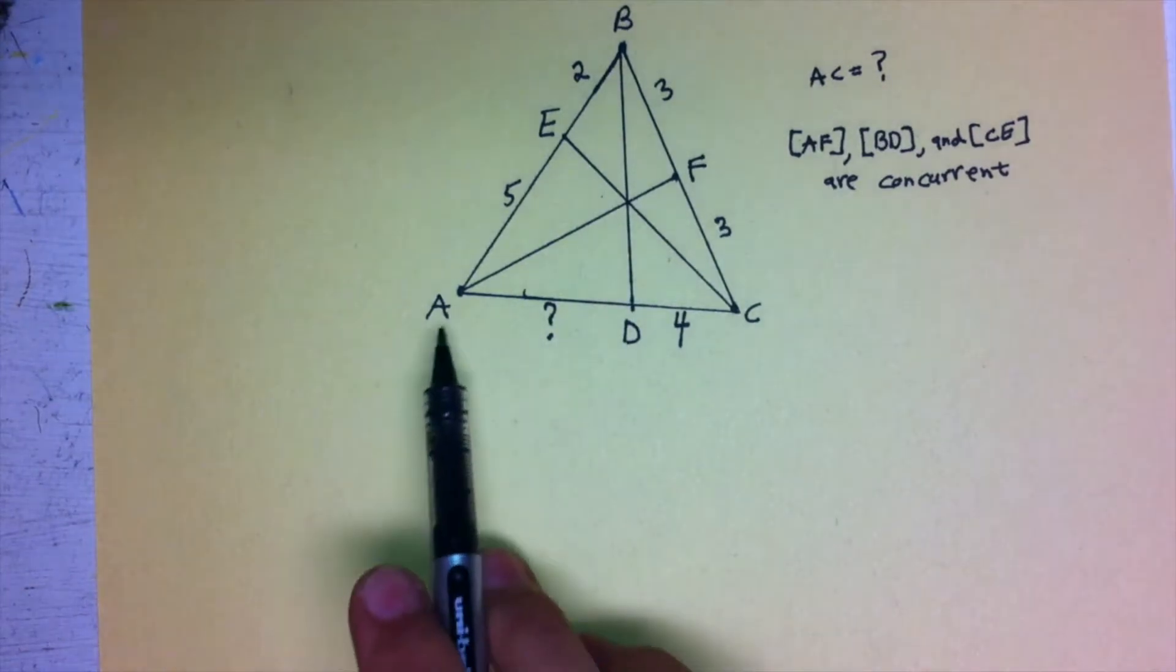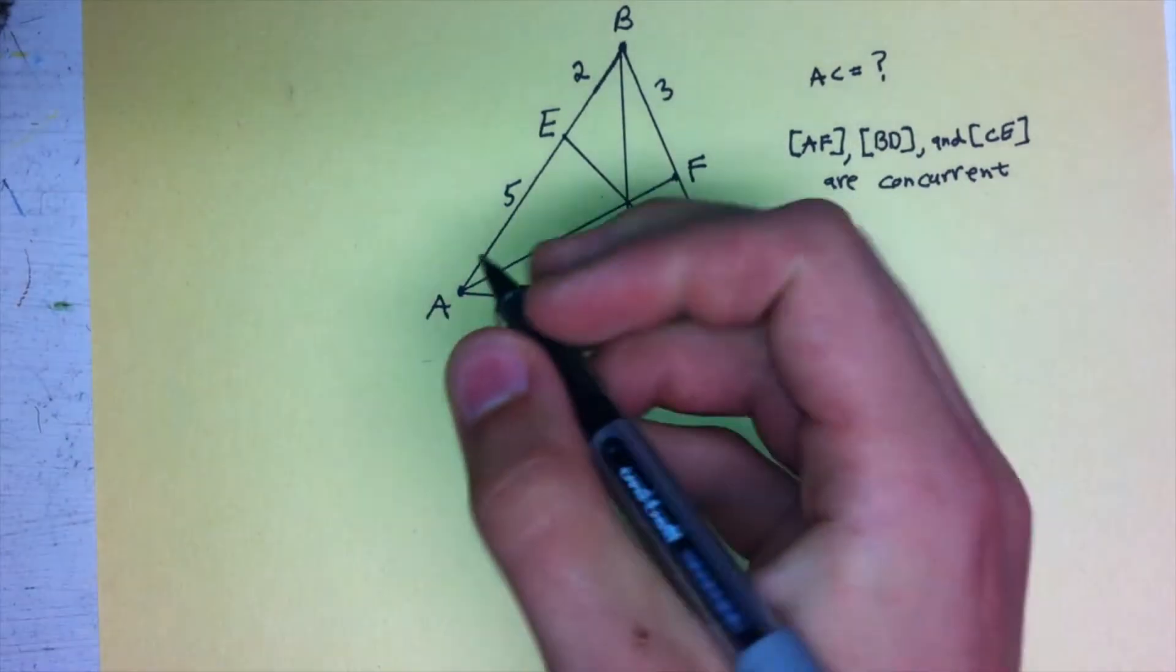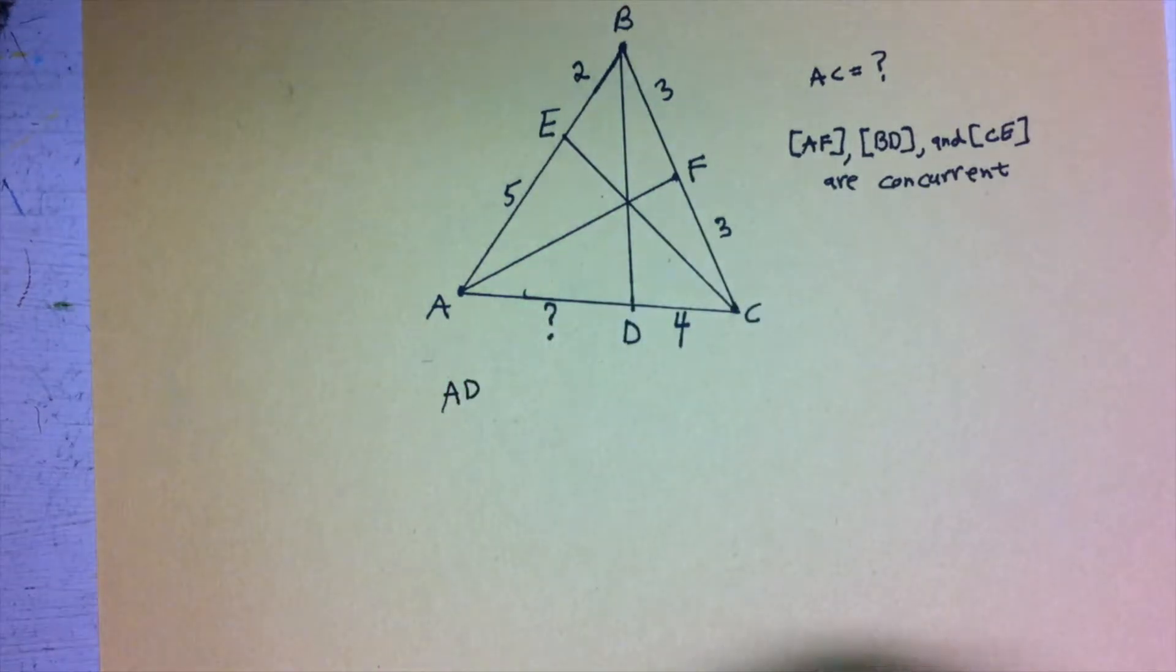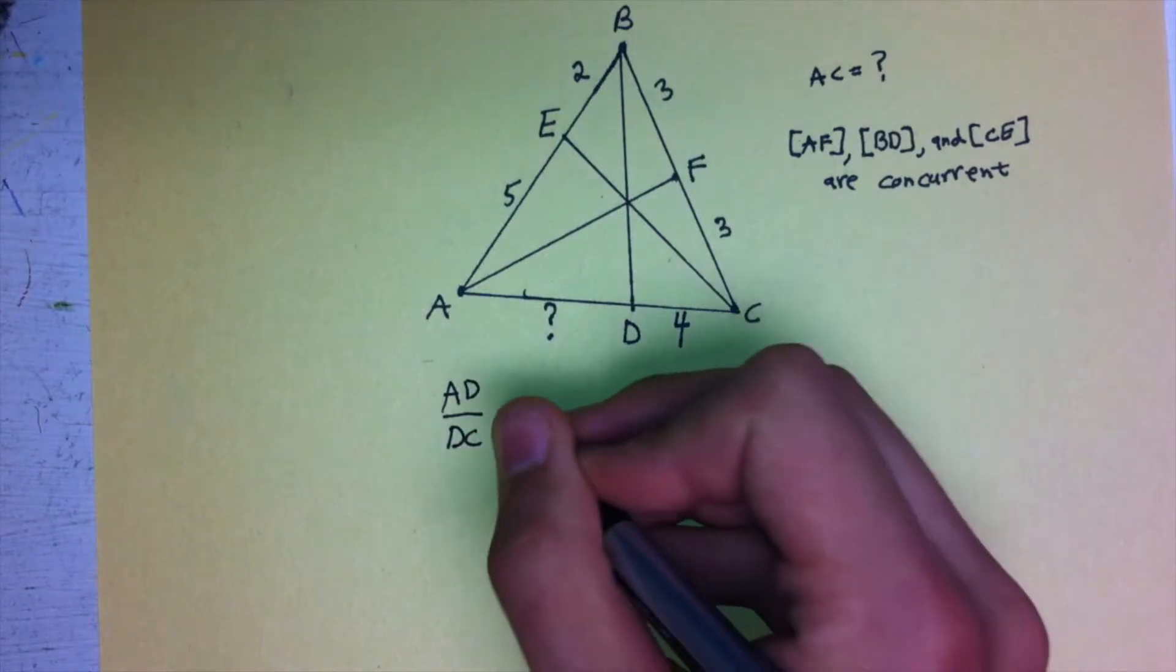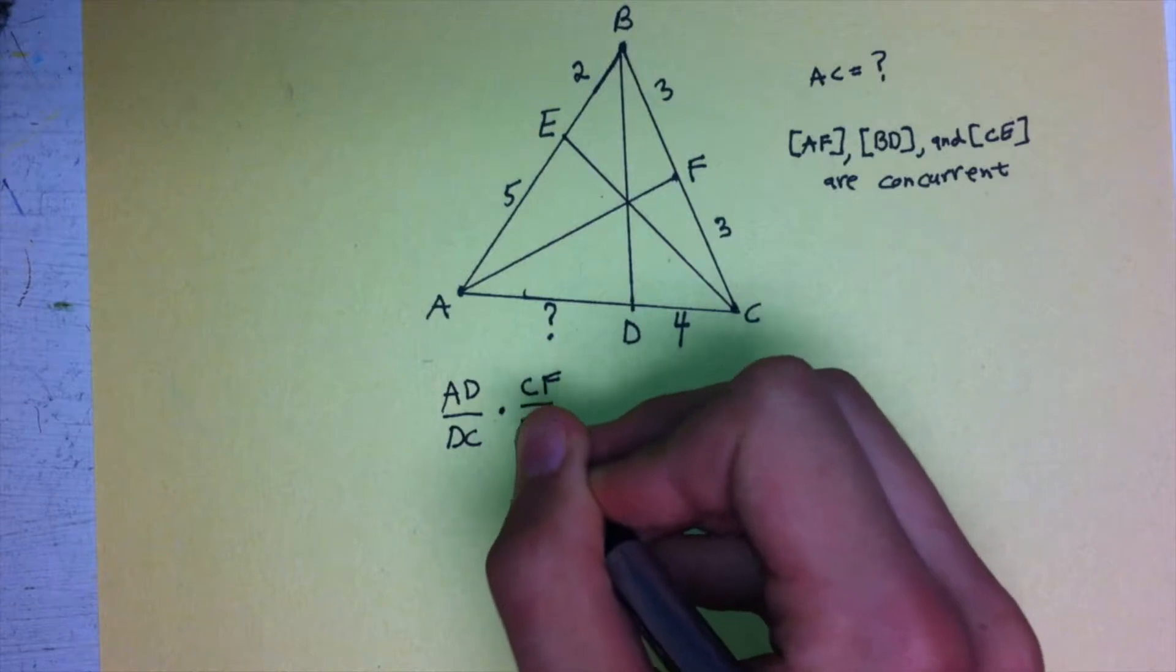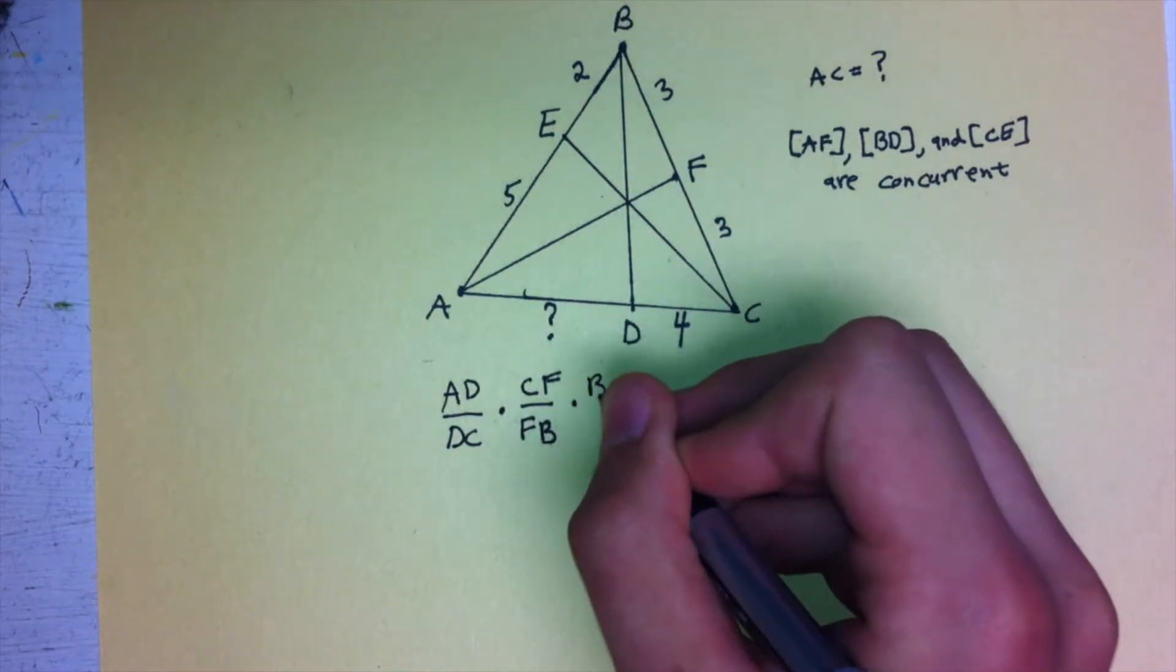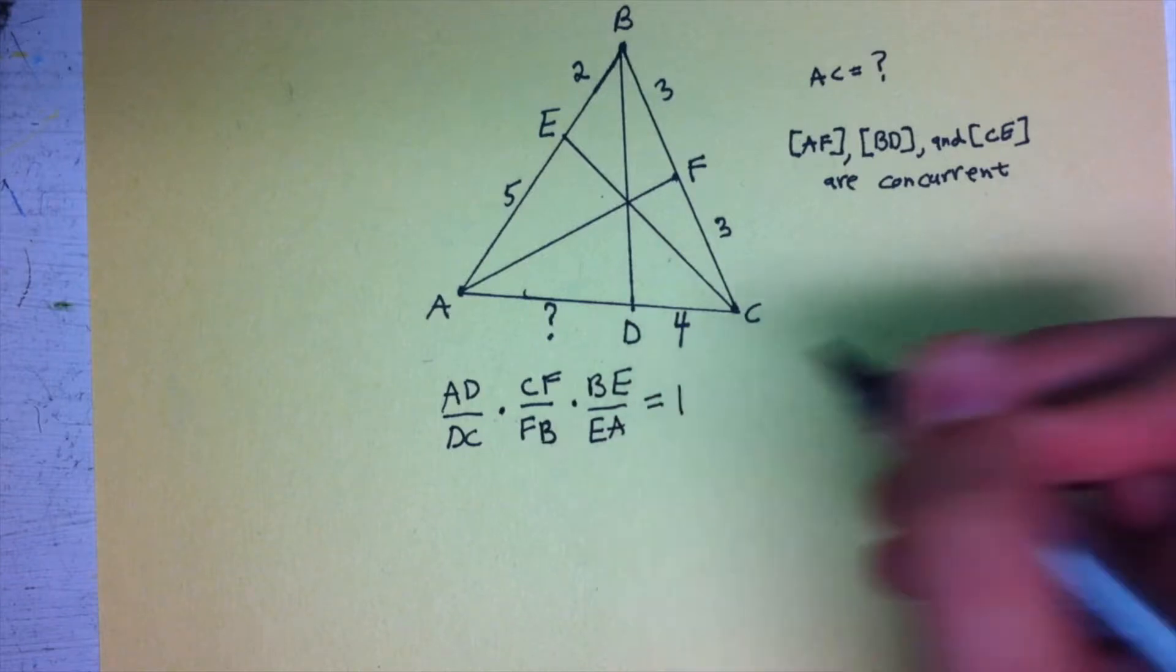We're going to start at vertex A and go around the triangle. So we have AD divided by DC times CF divided by FB times BE divided by EA equals 1.